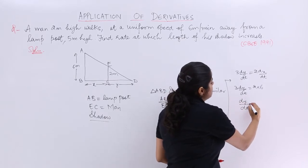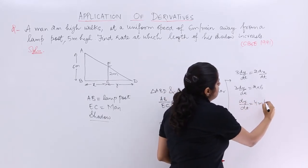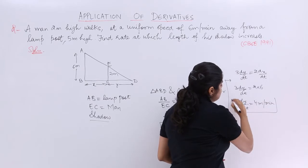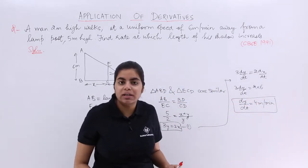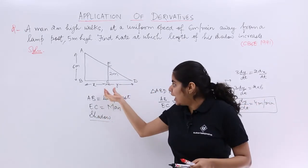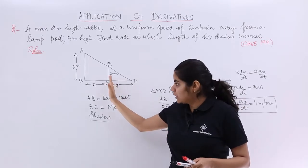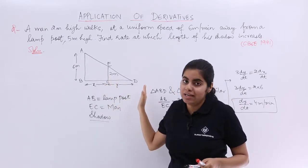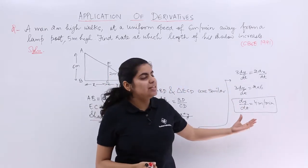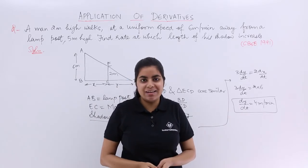So dy by dt is nothing but 4 meter per minute. And that is the answer. Because he had been talking about the rate at which his shadow will increase when he moves away. So definitely it will increase because of the y. So dy by dt equals 4 meter per minute is the answer.